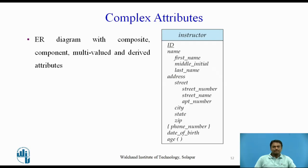A figure shows how composite attributes can be represented in ER notation. A composite attribute name, with component attributes first name, middle initial, and last name, replaces the simple attribute name of instructor. As another example, an address can be defined as a composite attribute with attributes street, city, state, and zip code. The attribute street is itself composite with component attributes street number, street name, and apartment number. The figure also illustrates a multi-valued attribute phone number denoted within curly brackets, and a derived attribute age depicted by age followed by round brackets.